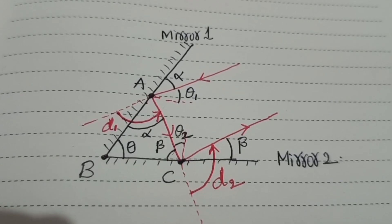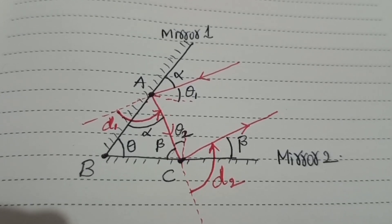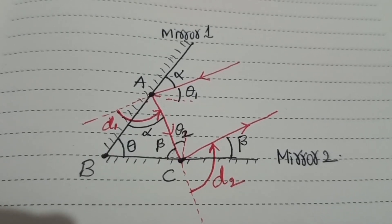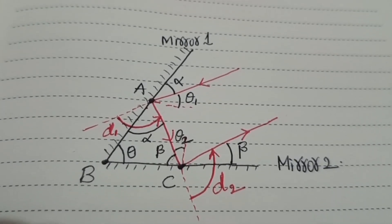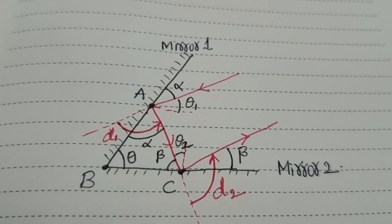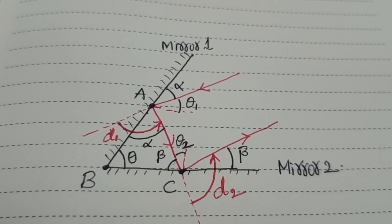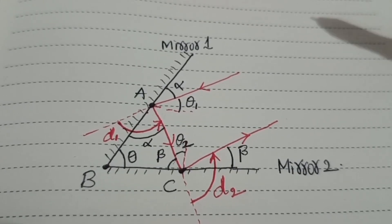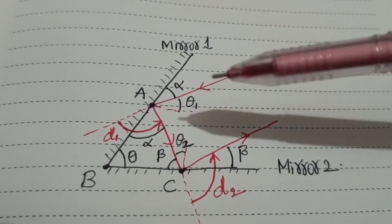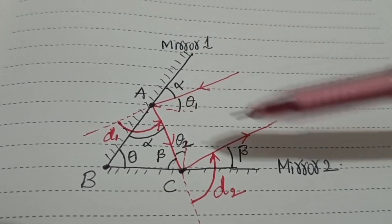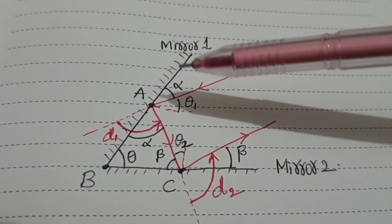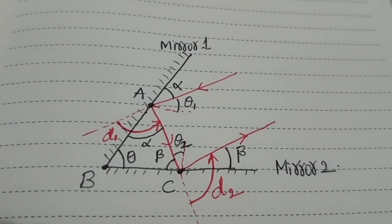Hi everyone. In this video we will try to understand how to find the total deviation when we arrange two plane mirrors with some angle between them.